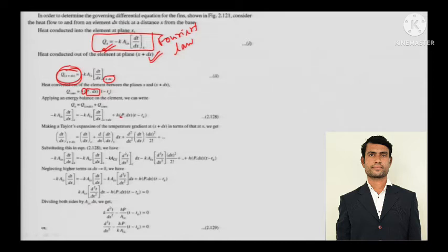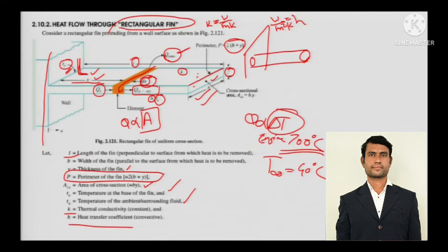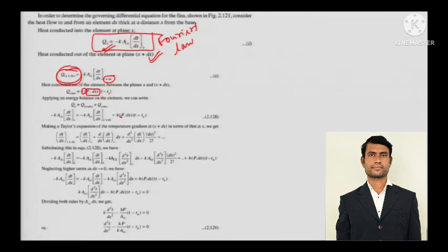Applying energy balance on the element: what comes in equals what goes out. So Q_x = Q_x+dx + Q_convection. Replacing these with their respective formulae — Fourier's law for the conduction terms and Newton's law of cooling for the convection term — gives the combined equation.